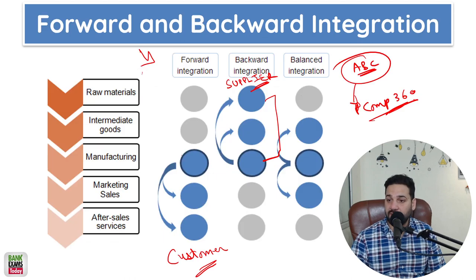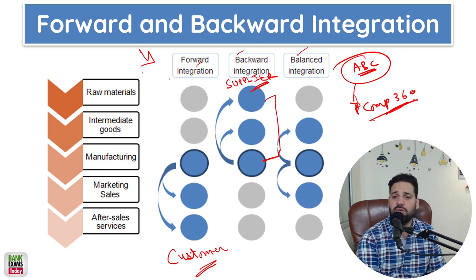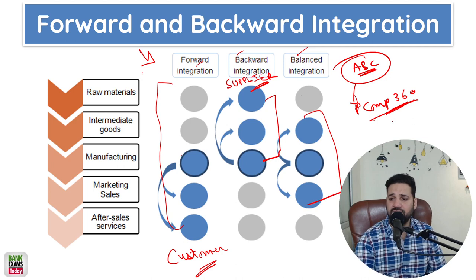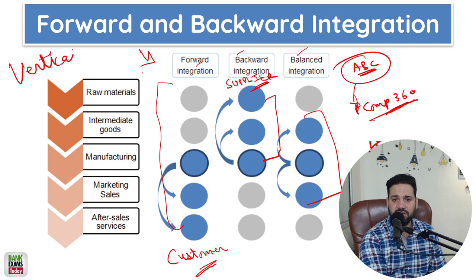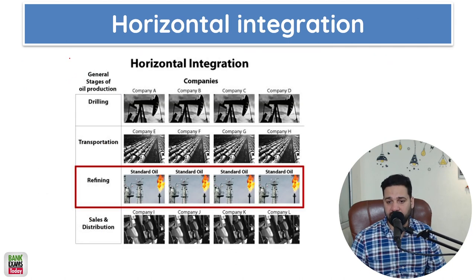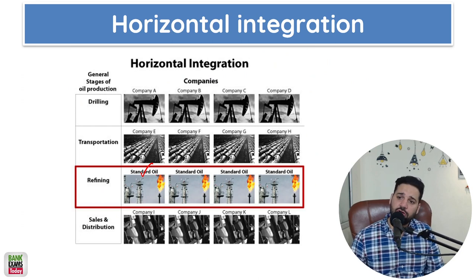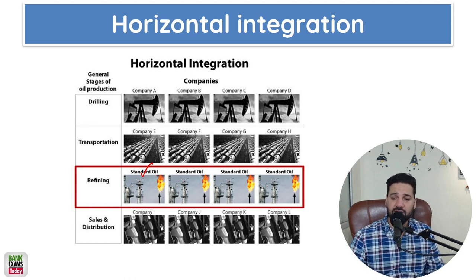What is horizontal integration? Forward and backward integrations are forms of vertical integration. What about balanced integration — you are doing both backward and forward. What is horizontal integration? Let's say you are an oil company and you are buying another oil company to increase your market share — that is horizontal integration. They are in the same process, doing the same job. For example, if BPCL is buying HP to increase their market share, that is horizontal integration.